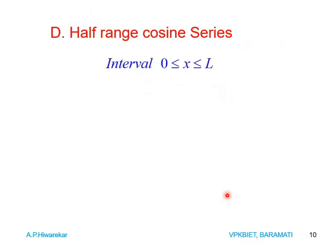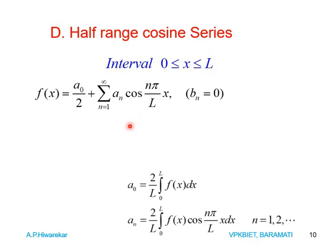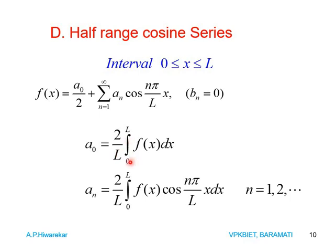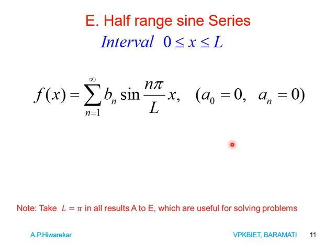Next is the half-range Fourier cosine series. We consider the interval 0 < x < L. When finding the cosine series, bₙ = 0 and F(x) = a₀/2 + Σ aₙ cos(nπx/L), where a₀ = (2/L) ∫ from 0 to L of F(x) dx, and aₙ = (2/L) ∫ from 0 to L of F(x) cos(nπx/L) dx for n = 1 to infinity. For the half-range Fourier sine series, the interval is also 0 < x < L.